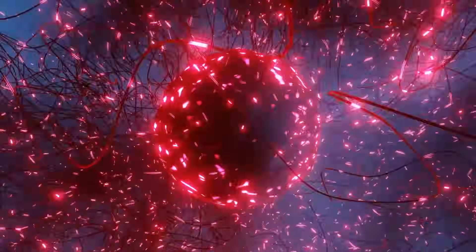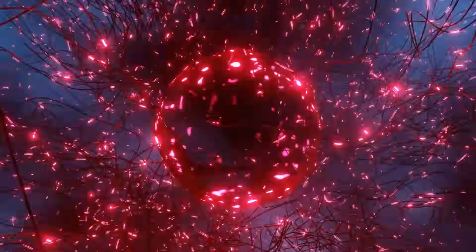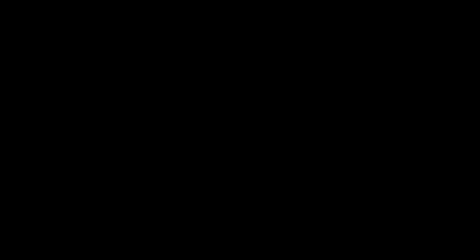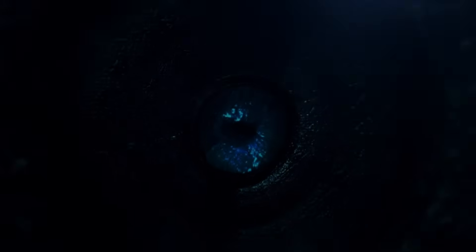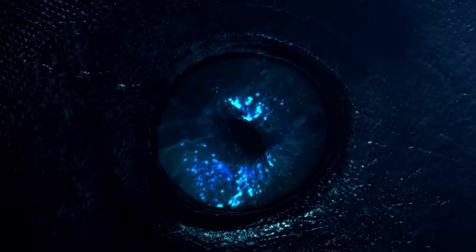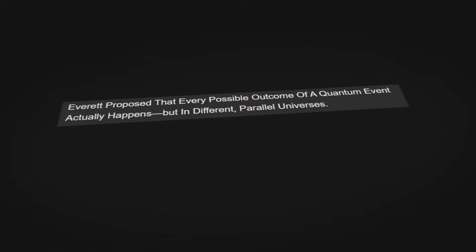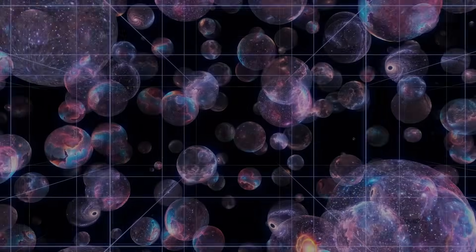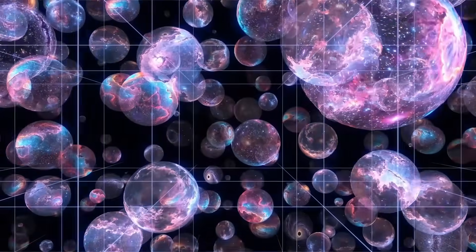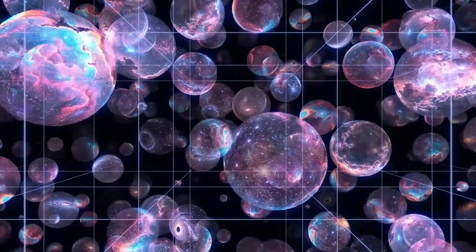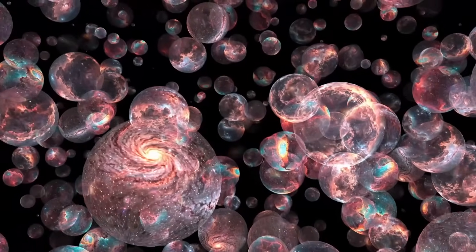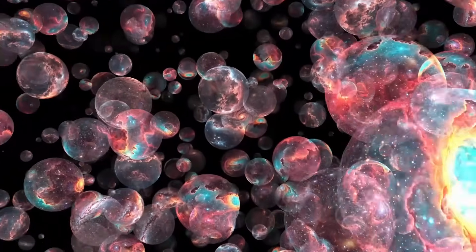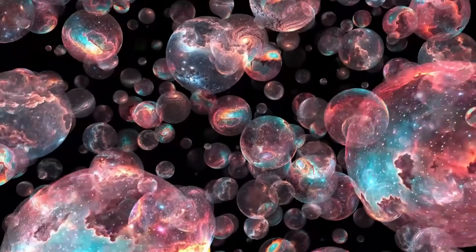As if Wheeler's participatory universe weren't mind-boggling enough, another interpretation of quantum mechanics offers an equally wild vision of reality: Hugh Everett's Many Worlds Hypothesis. While Wheeler suggested that observation collapses possibilities into one reality, Everett proposed that every possible outcome of a quantum event actually happens, but in different parallel universes. Imagine every decision you make, every quantum measurement splits the universe in two. In one universe, you made the choice to go left, and in another, you were right. Both versions of you exist, living out those separate possibilities, but in parallel universes.